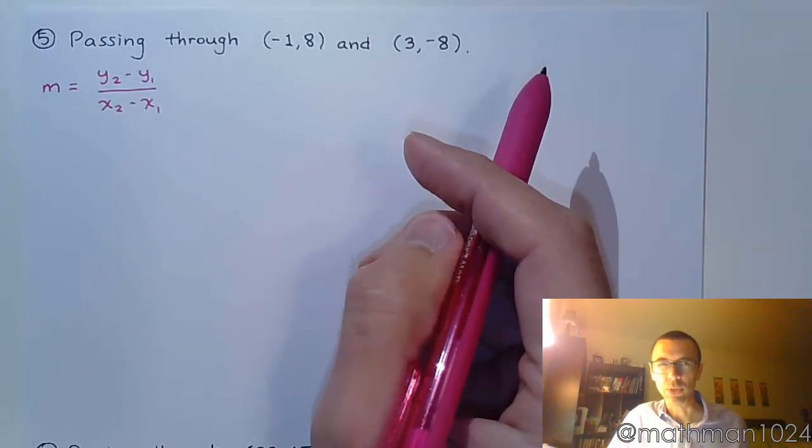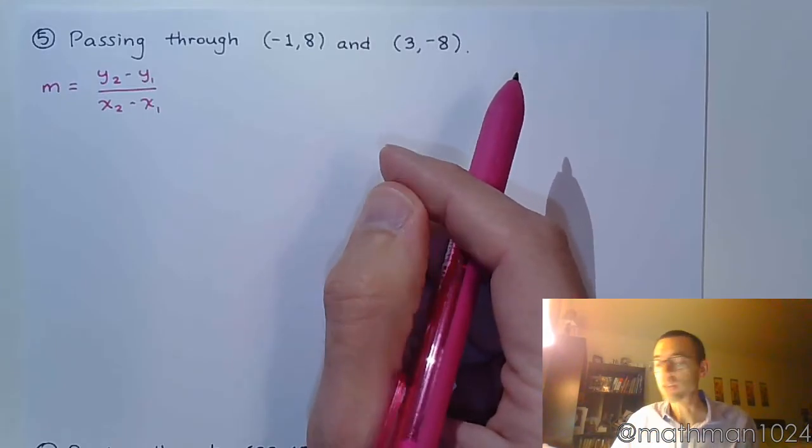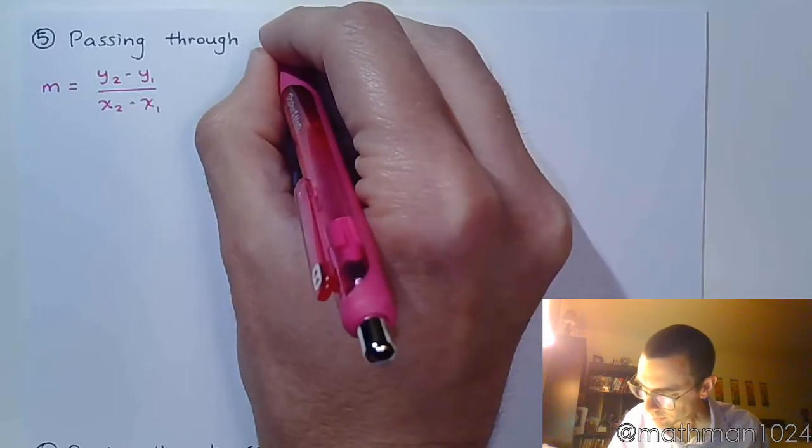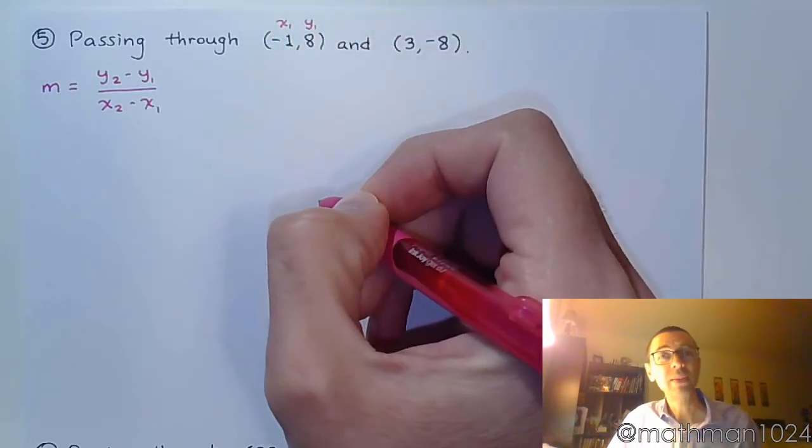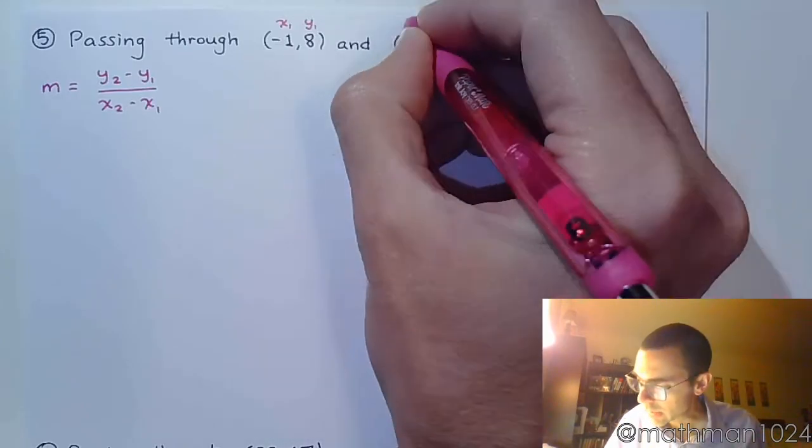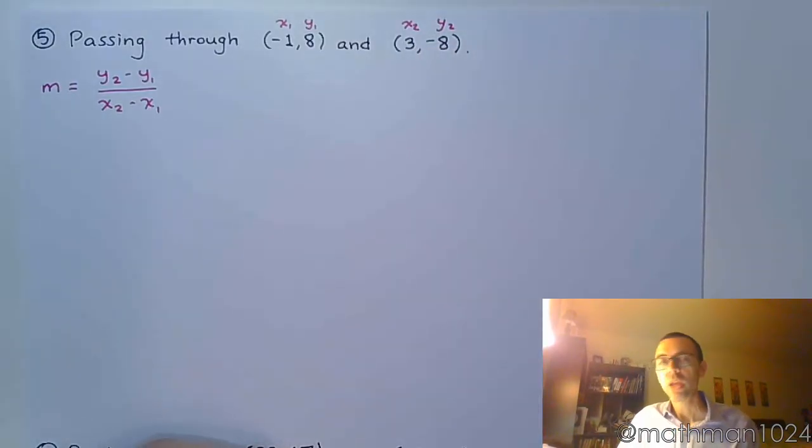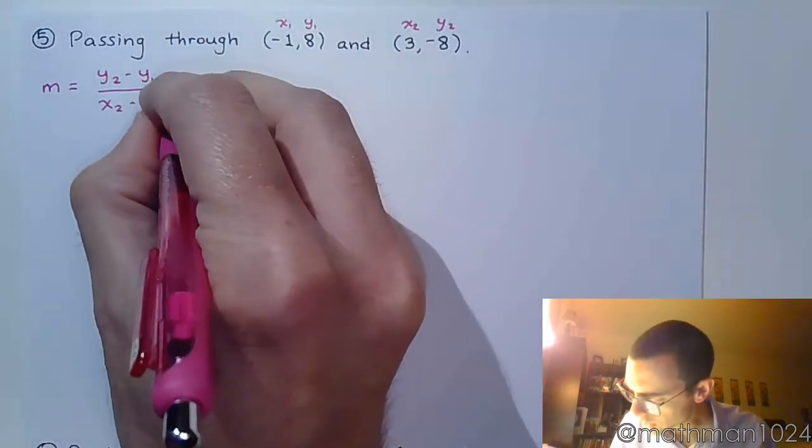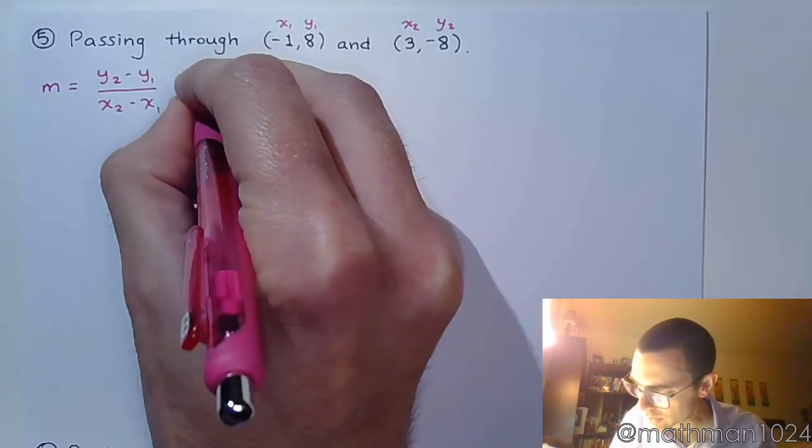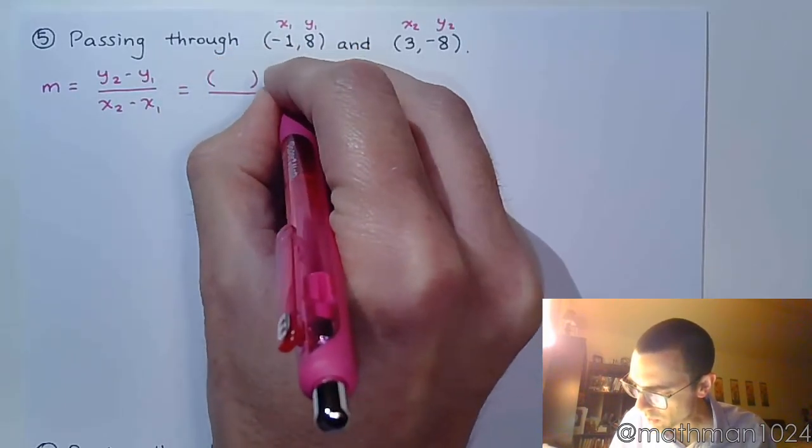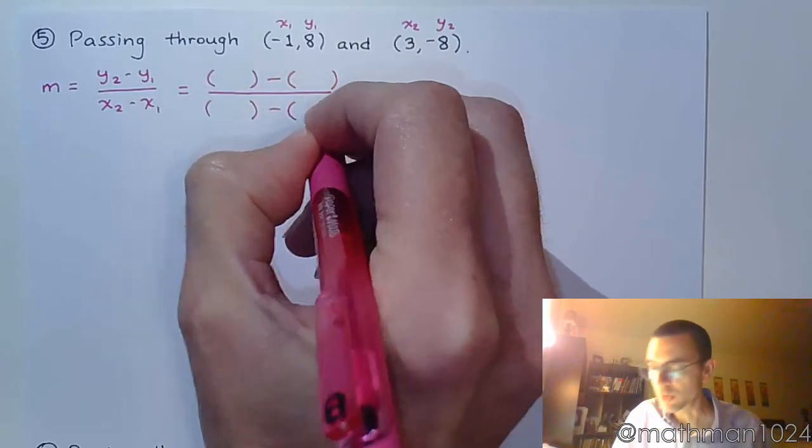Now it doesn't really matter how you label these, as long as you make sure that you say this is the first point, this is the second point. So if you want to call this one x1, then this has to be y1. And they have to have the same subscript. Just like over here, if you're going to call that x2, this has to be y2. Now when you plug into the slope formula, because we've got negatives running around, I want you to go ahead and write your parentheses for those coordinates that you're going to be plugging into this formula.